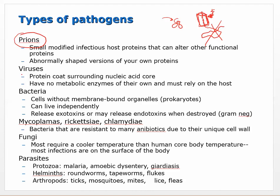Viruses are just a simple protein coat - a bunch of proteins that form a sphere or various shapes. Within that coat is some single-stranded DNA or RNA, a very simple nucleic acid chain. The virus can't make its own ATP or enzymes - it has to rely on a host cell and cannot survive on its own without one.